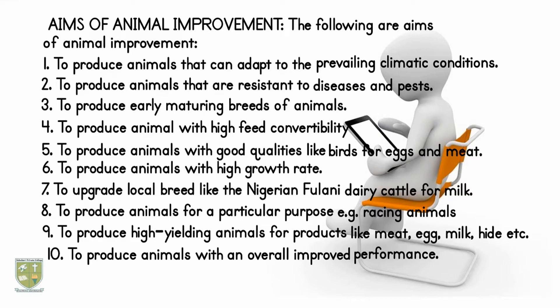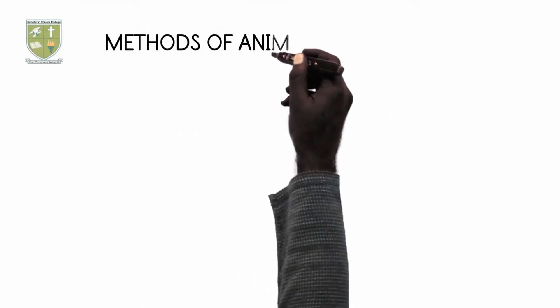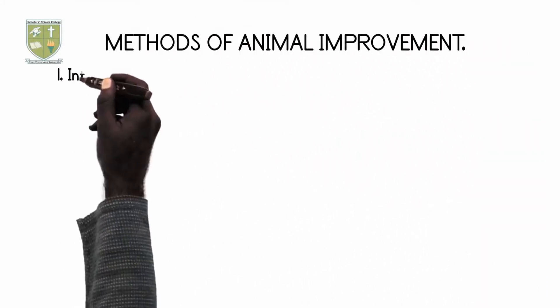7. It is targeted at upgrading local breeds like the Nigerian Fulani dairy cattle for milk. 8. It is targeted at producing animals for a particular purpose, for example racing animals. 9. It is targeted at producing high yielding animals for products like meat, egg, milk, hide, etc. 10. It is targeted at producing animals with an overall improved performance.